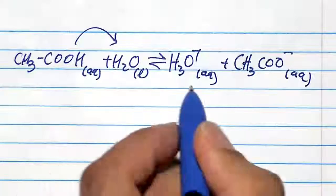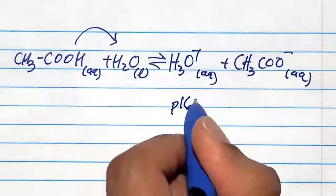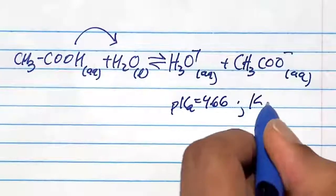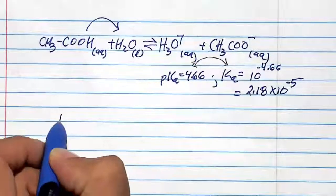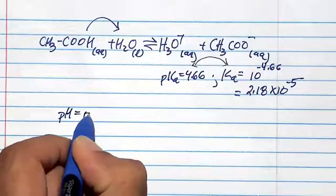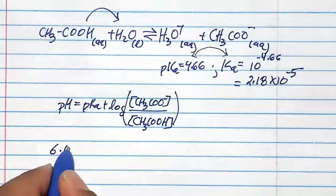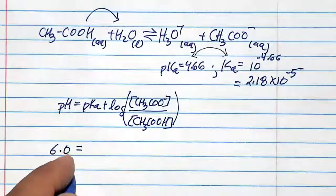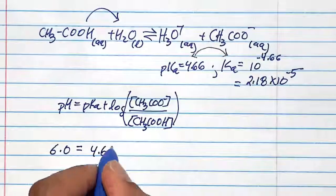It has a pKa of 4.66 according to the problem. We can get a Ka for that. Let's go back to our Henderson-Hasselbalch here. pH is equal to the buffer to be at pH 6.0.